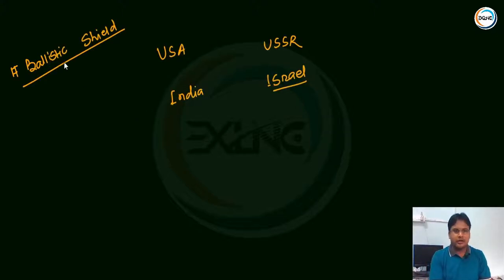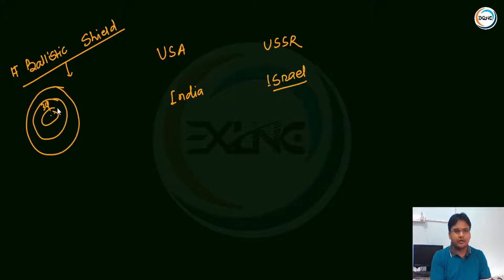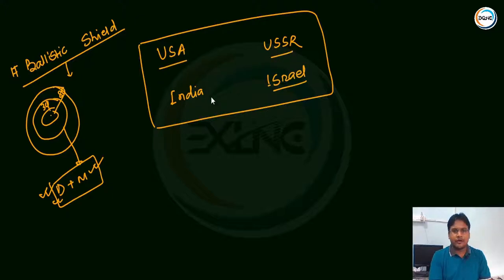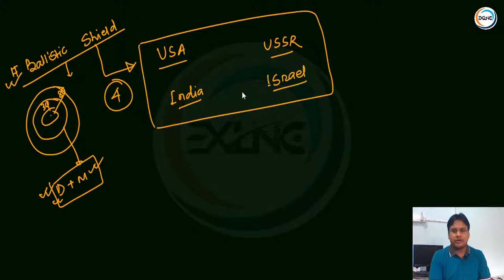An important concept is the ballistic shield. Under the Ballistic Missile Defense program, Ashwin and Pradhiman class act as a protective shield for India, covering from 30 km to 80 km altitude. In the world, only 4 countries have this ballistic shield. In India, two cities are protected by this ballistic cover: Delhi (national capital) and Mumbai (financial capital). The four countries with a ballistic shield are USA, USSR (Russia), Israel, and India. Even China does not have a ballistic shield.